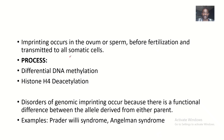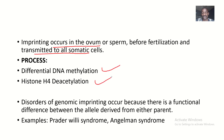Imprinting occurs in the ovum or sperm before fertilization and is transmitted to all somatic cells. Processes of imprinting include differential DNA methylation and histone H4 deacetylation. These orders of genomic imprinting occur because there is a functional difference between the alleles derived from either parent.